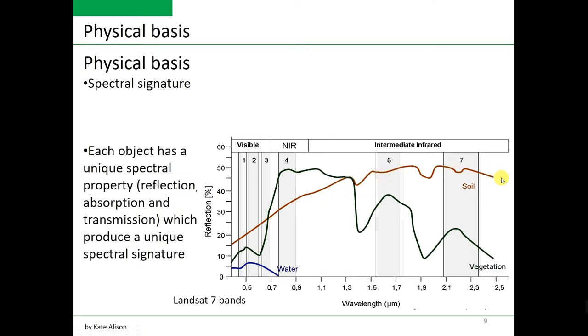So it has a gradual increase, and this is also a unique property. So what you can see from these three spectral signatures is that they are different. They have different reflectance values in different parts of electromagnetic spectrum. And this is one of the spectral signature properties, spectral signature pattern recognition, which is used in land use and land cover classification.